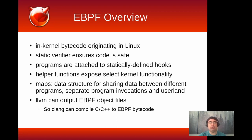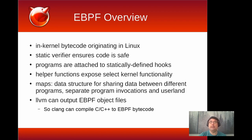You can attach these bytecode programs to statically defined hooks in the Linux kernel. The best analogy to FreeBSD functionality would be the firewalls. In FreeBSD we have IPFW, PF, and IPFilter — loadable kernel modules. We have hooks in our packet input and output paths, and every packet that passes by this hook is passed to the firewall, where it can run its rules and inform the kernel whether the packet should be dropped, allowed, redirected, or rewritten.